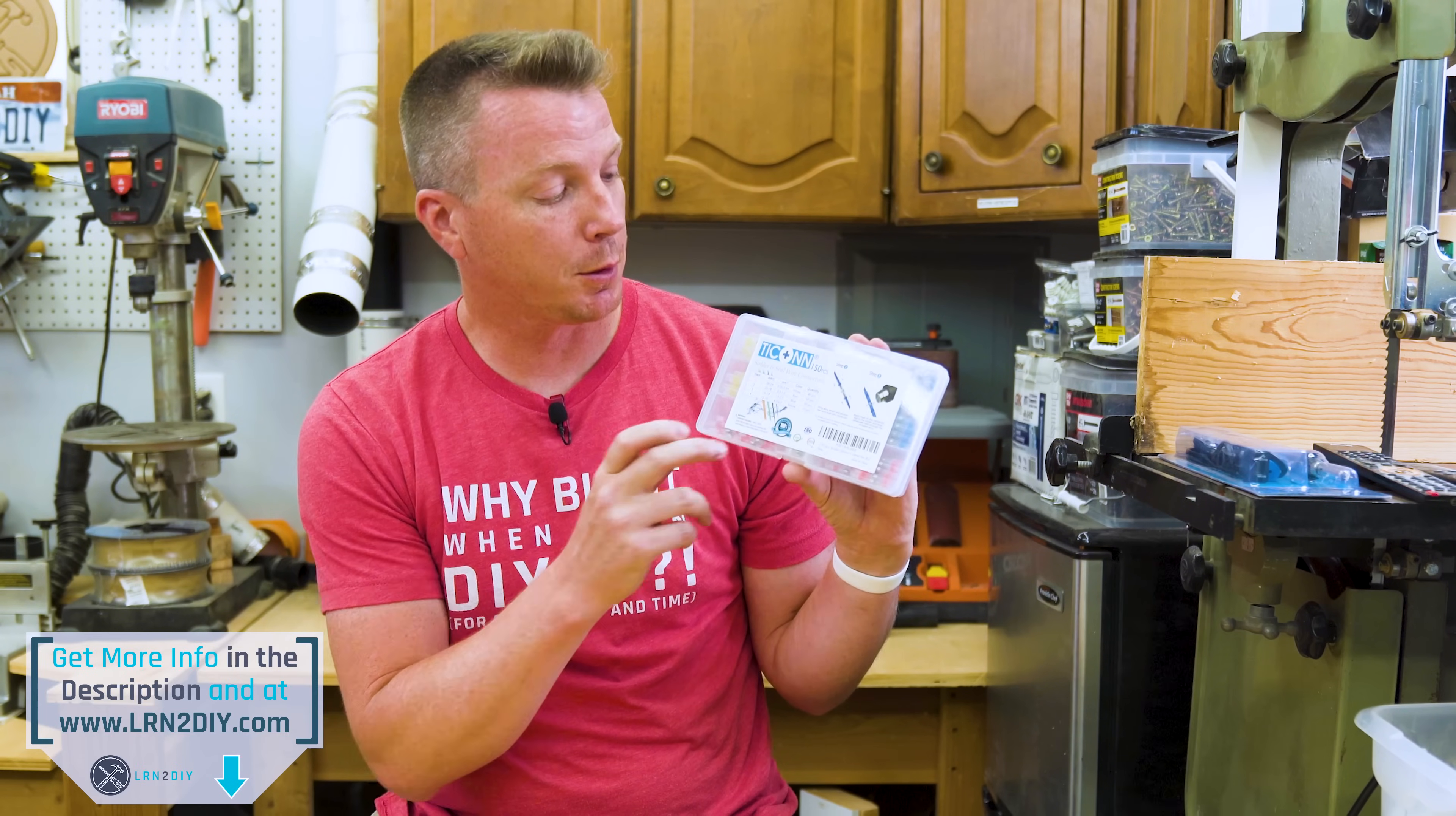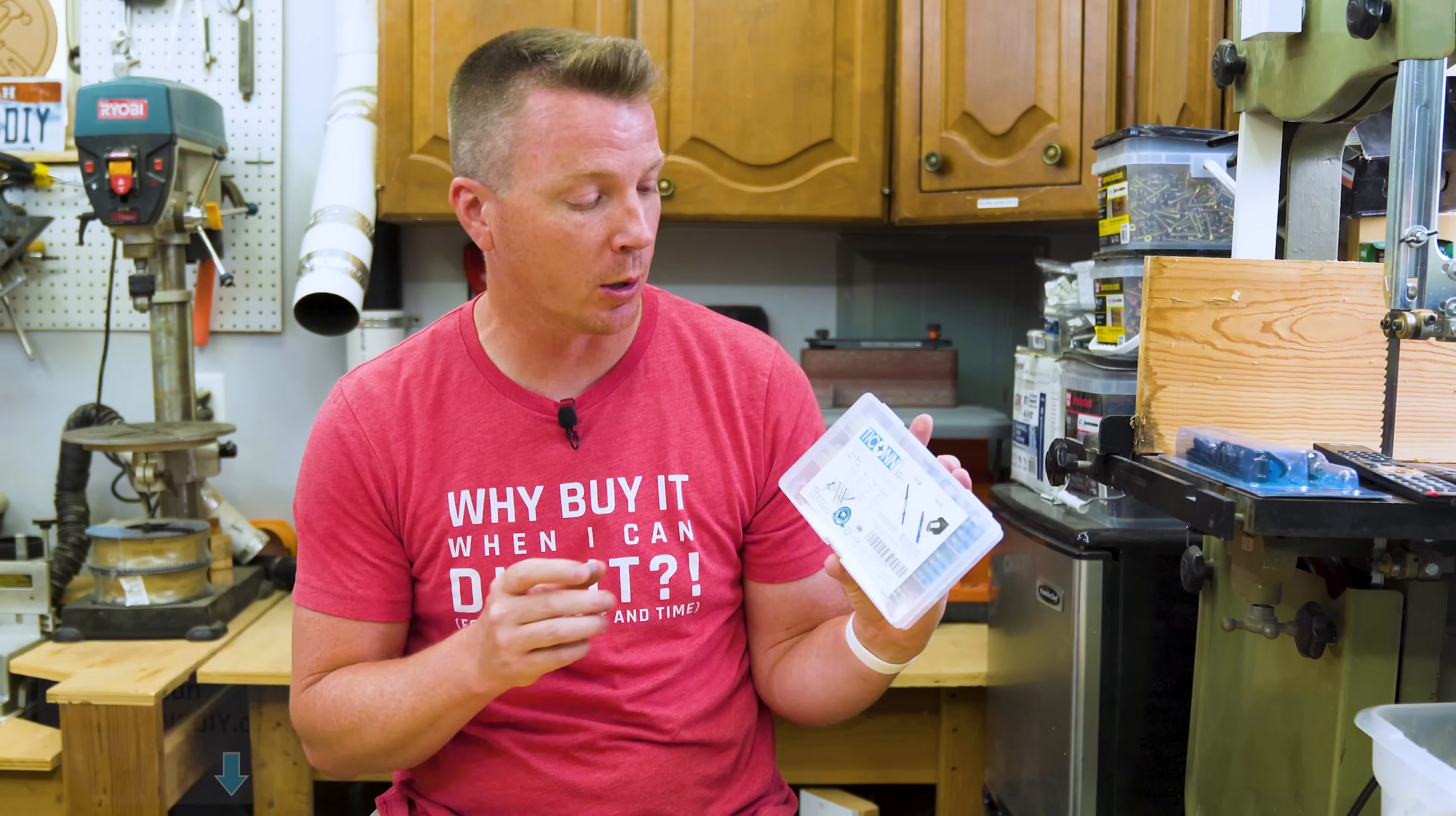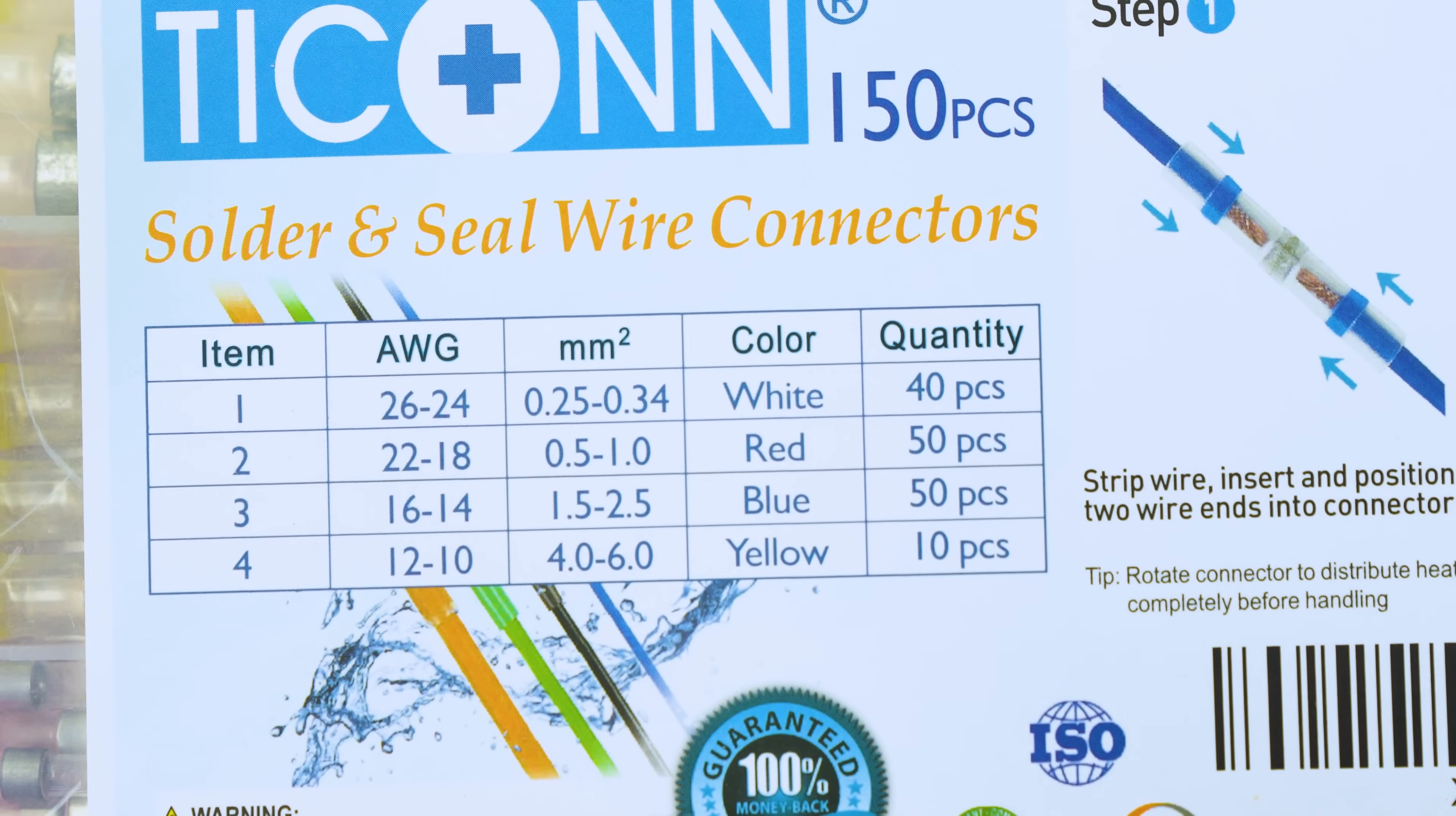You can buy an entire 150-piece kit like this for just 10 bucks on Amazon. I'll put links to that in the description below and it has all different sizes and it has quite a few of each of them. And for joining stranded wires, it doesn't get easier and almost doesn't get stronger or more efficient than getting these. It's a pretty fantastic little invention.